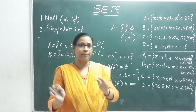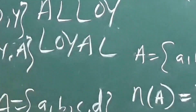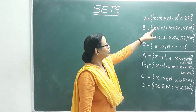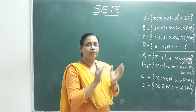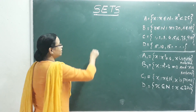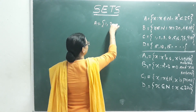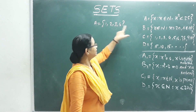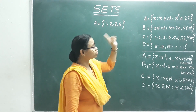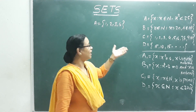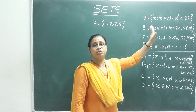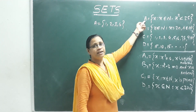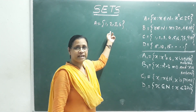Let's look at worked examples. First: A = {x : x ∈ N, x² < 25}. We check natural numbers: 4² = 16, 3² = 9, and so on. Zero is not a natural number, and negative numbers are excluded. So in roster form, A = {1, 2, 3, 4}.